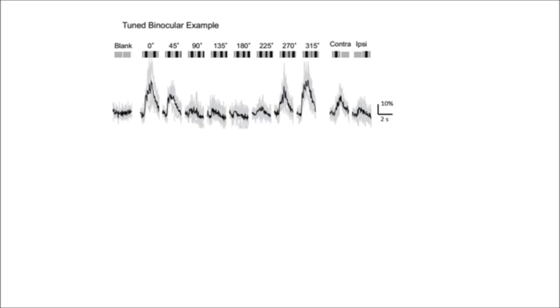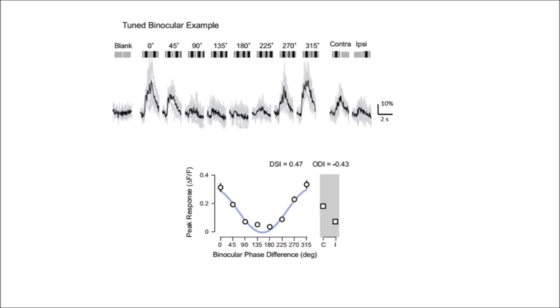These raw fluorescence traces are then processed across each condition to give the average response for each condition per cell, shown in this figure. We have used two metrics to compare these responses. Ocular dominance index compares the responses across the two monocular conditions, while the disparity selectivity index measures the response modulation across the eight binocular conditions.